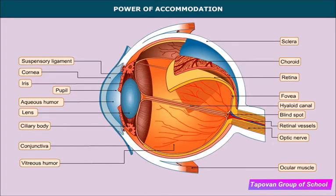The least distance at which an eye can see an object clearly is known as the near point — it is 25 centimeters. The ciliary muscles stop contracting if the distance is less than 25 centimeters, so objects closer than this are not seen clearly. The maximum distance at which an object can be clearly seen is the far point; for a normal eye, it is infinity.